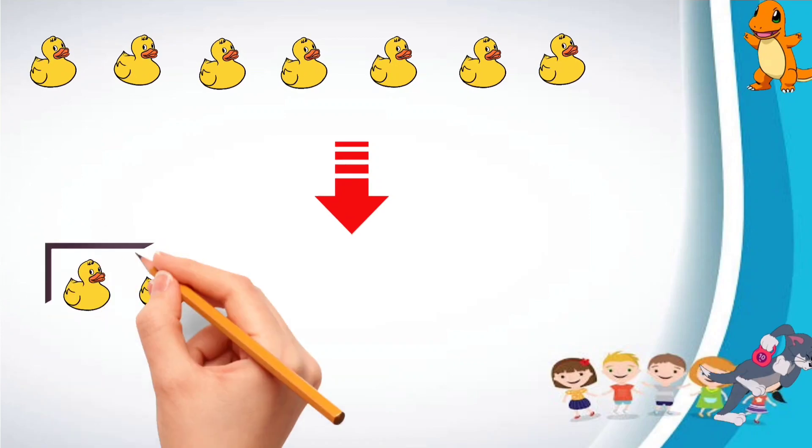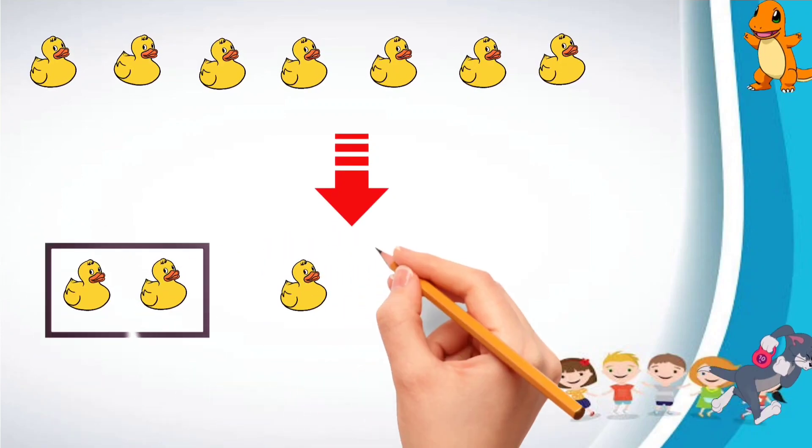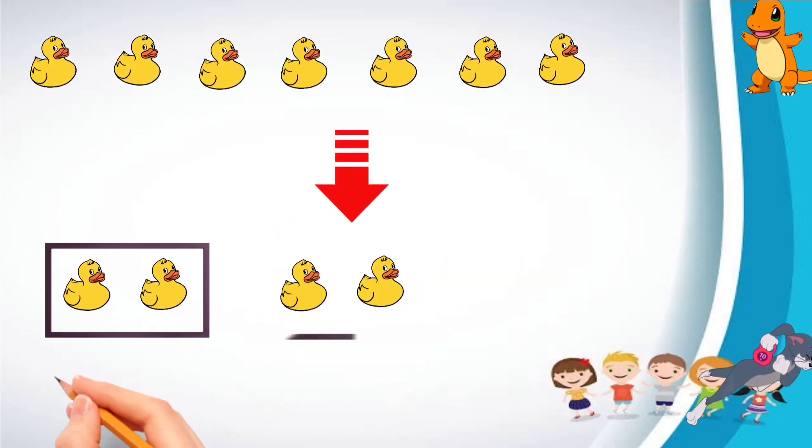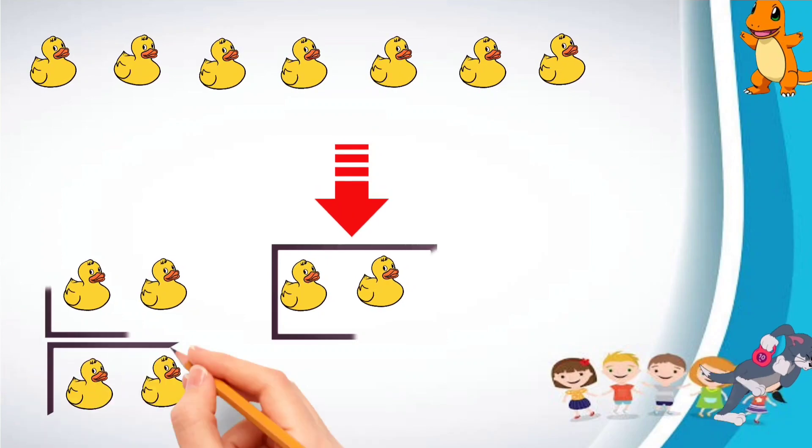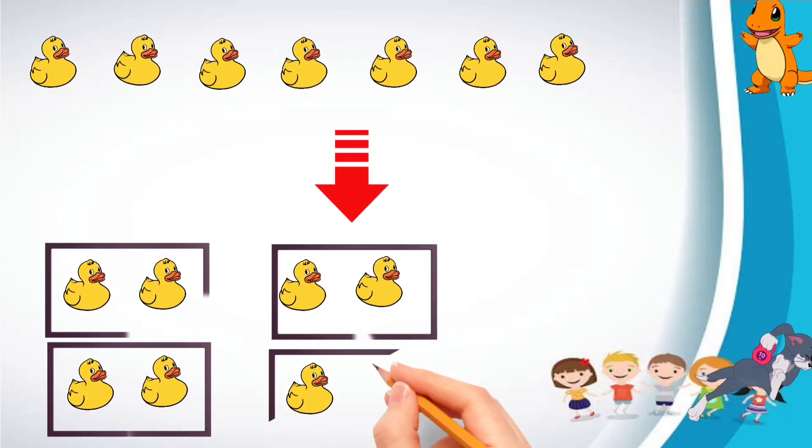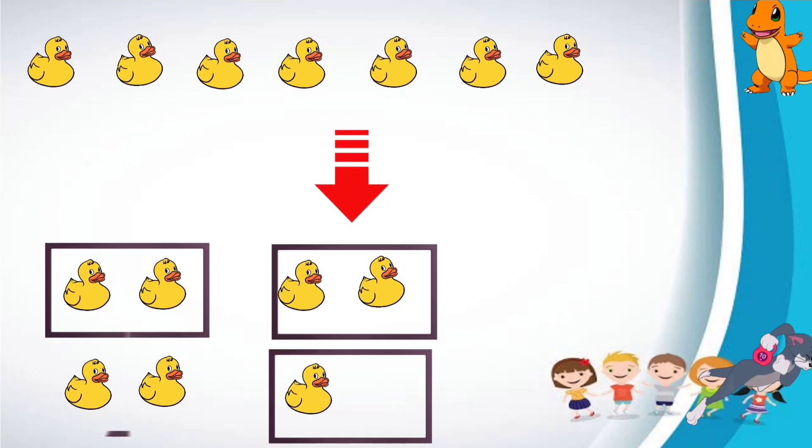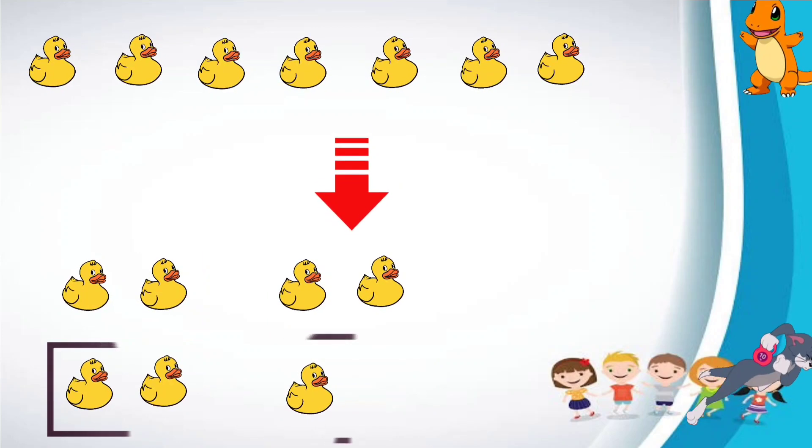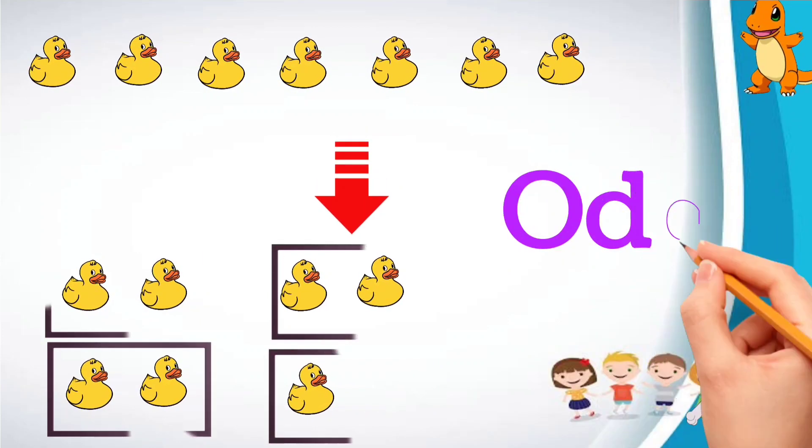First pair. Then second pair. Then third pair. Oh, one duck is left out. This dog can't make a pair. So the number is odd.